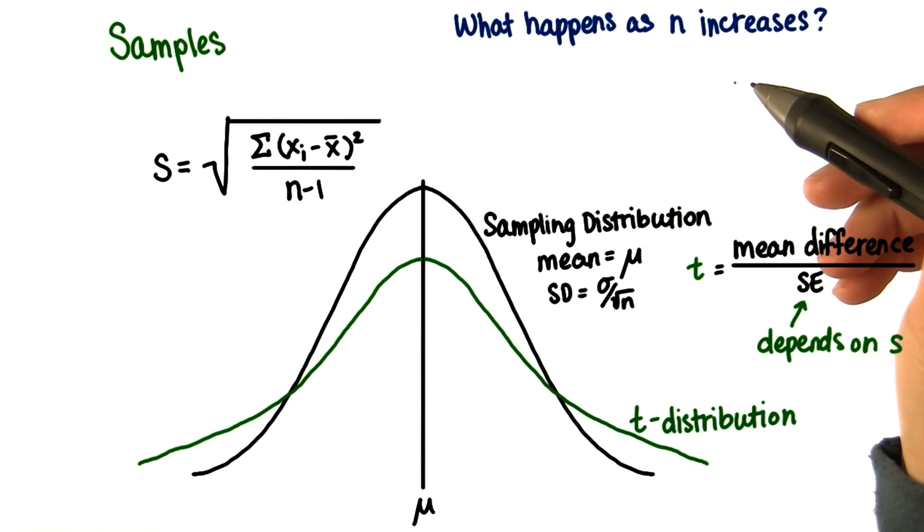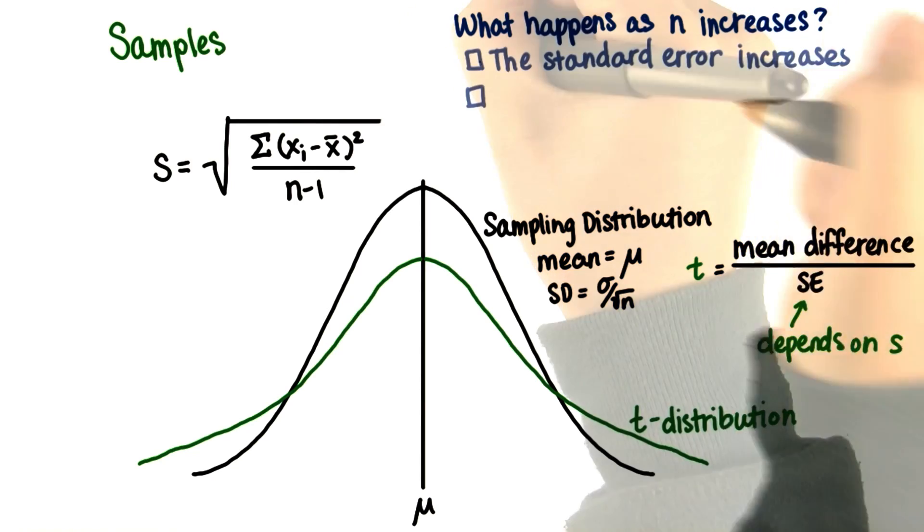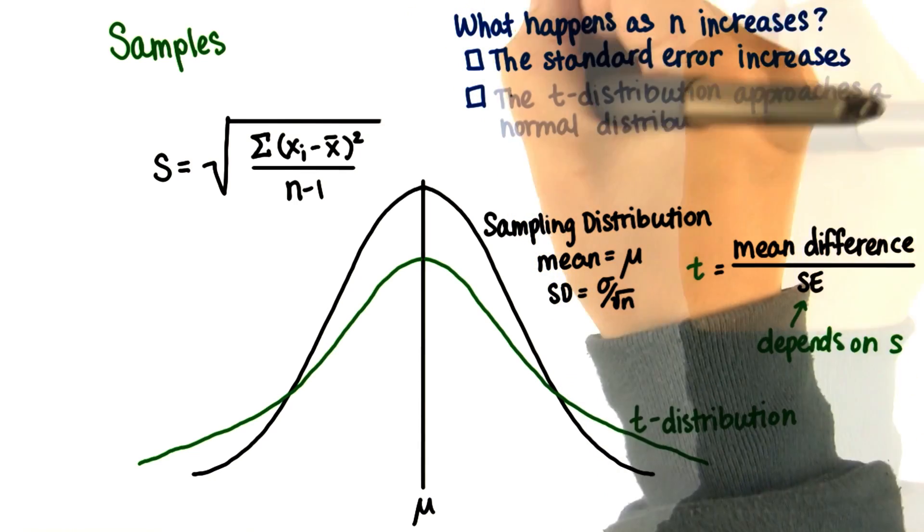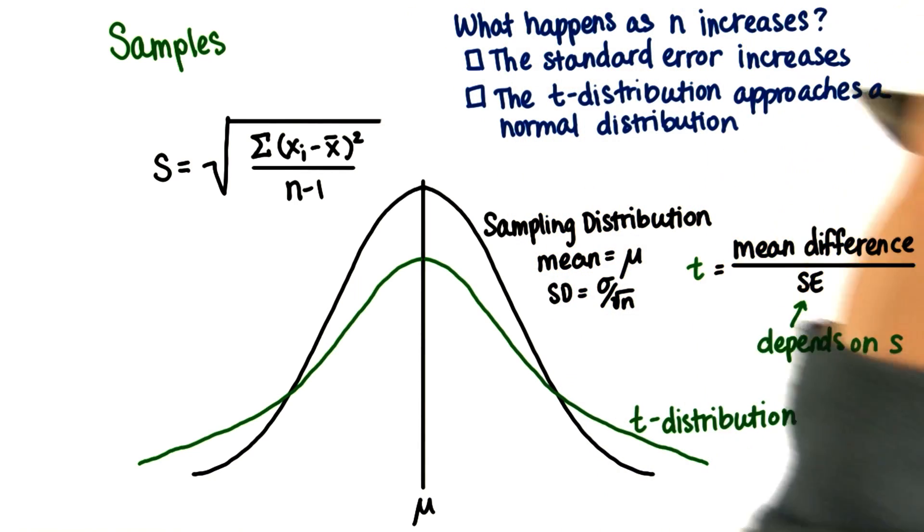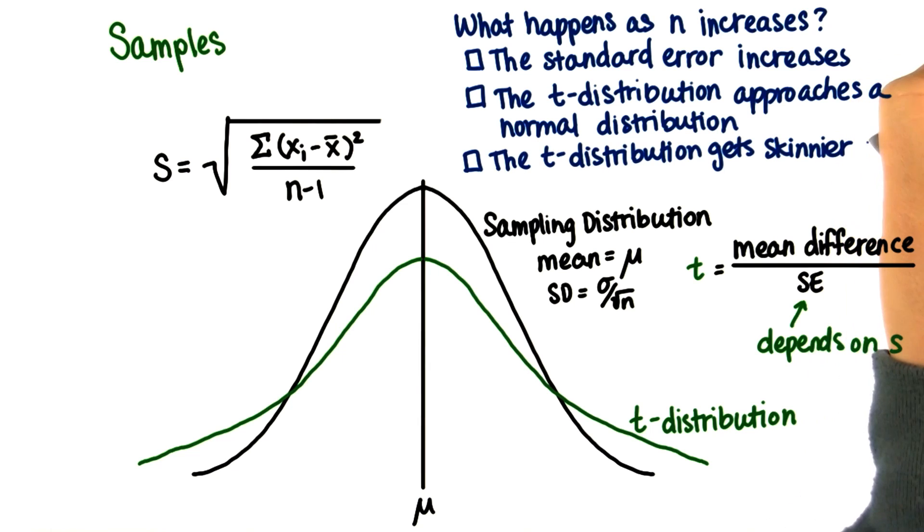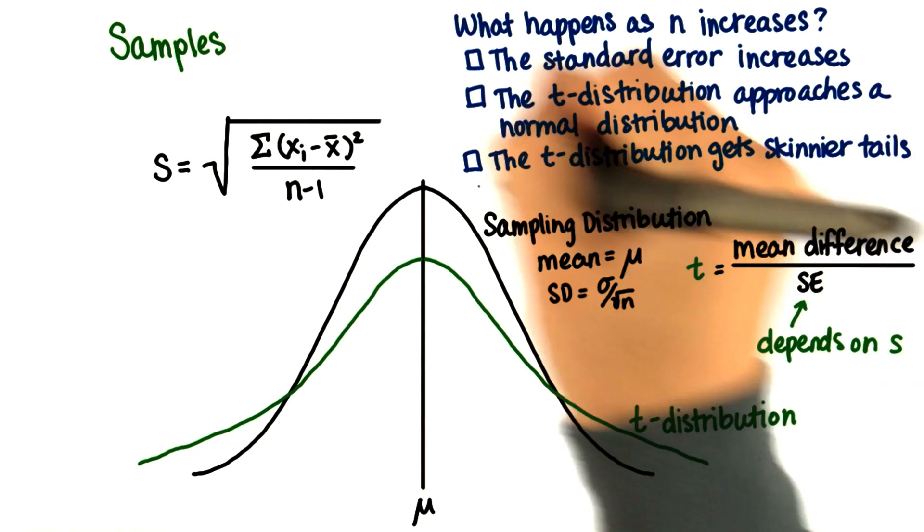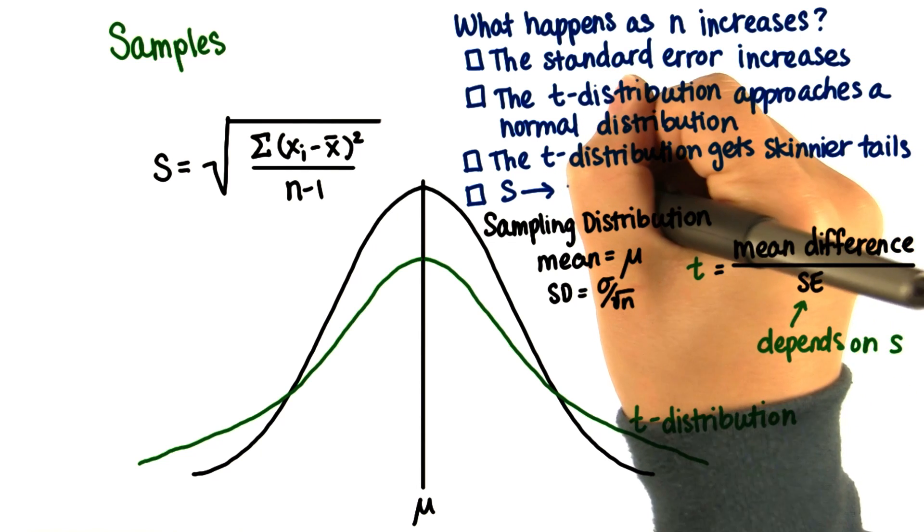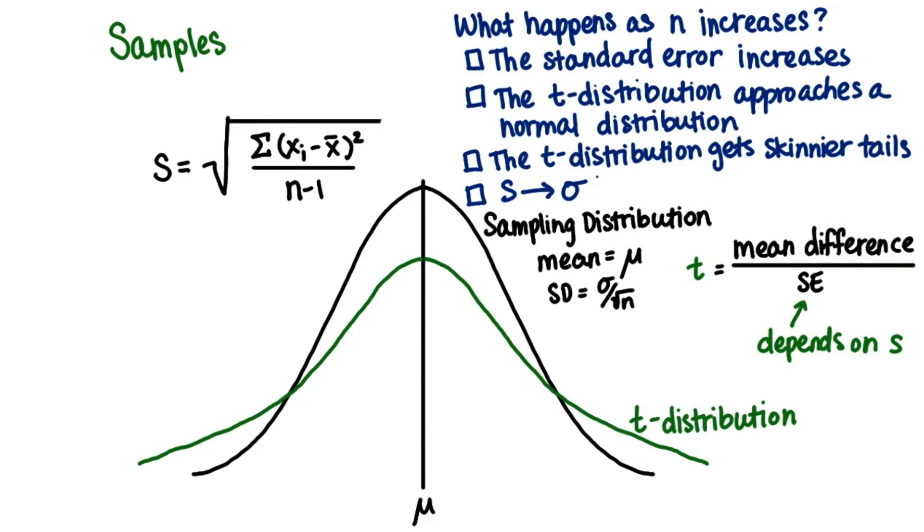So what do you think happens as n, the sample size, increases? The standard error increases. The t-distribution approaches a normal distribution. The t-distribution gets skinnier tails. And finally, s, the sample standard deviation, approaches sigma.